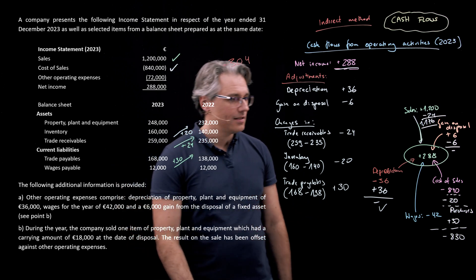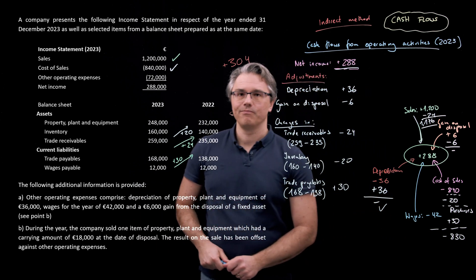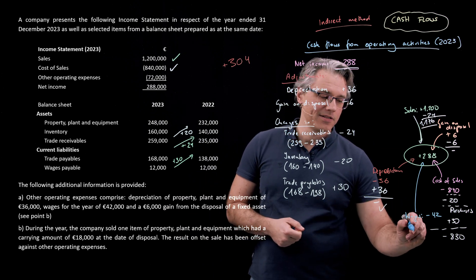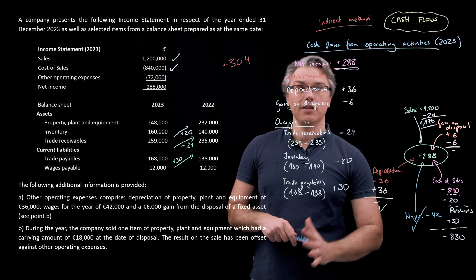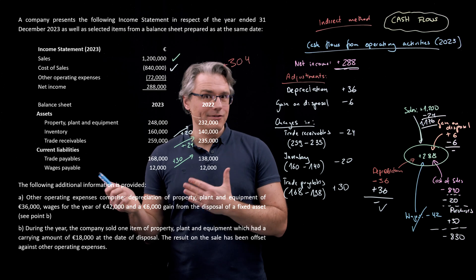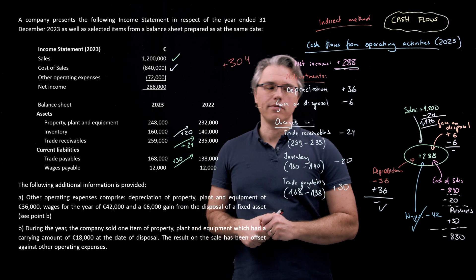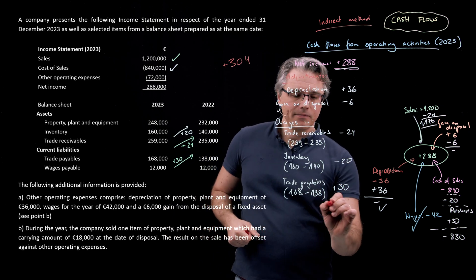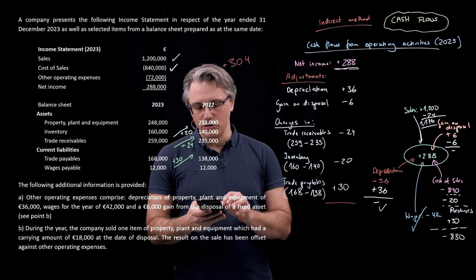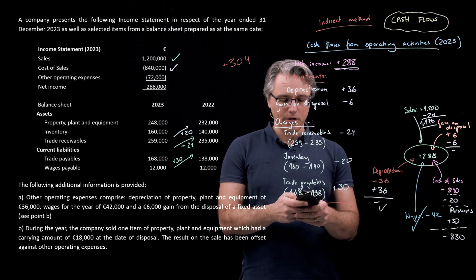When it comes to wages payable, there is no change year on year, so I'm not going to deal with this. It means the figure which went to the income statement does not require any adjustments. It's fine as it is from a cash perspective - that's how much cash went to employees, as we recognized when we did this under the direct approach in the previous video.